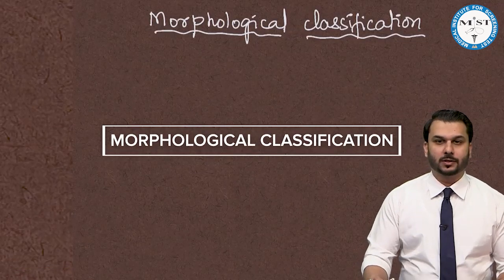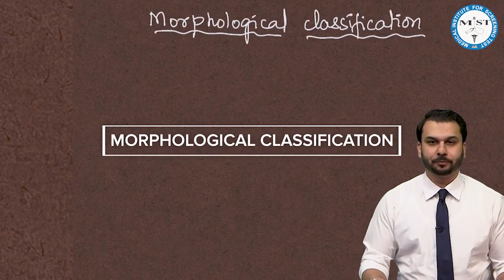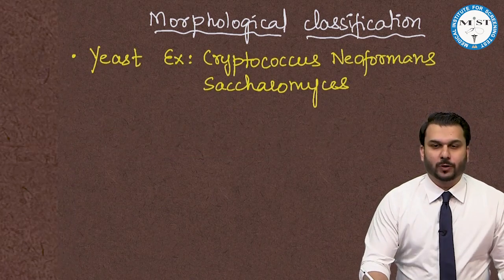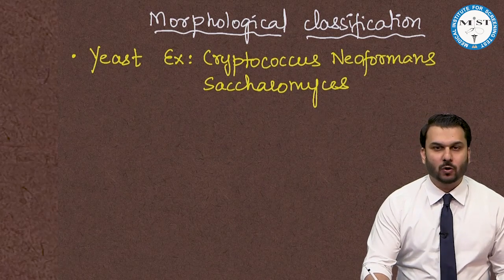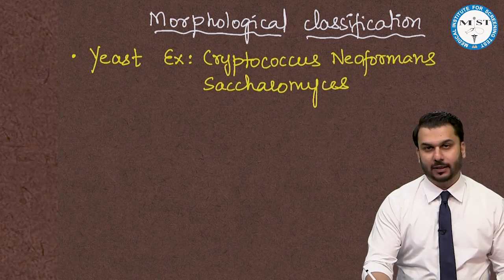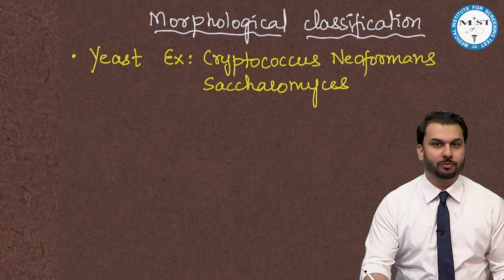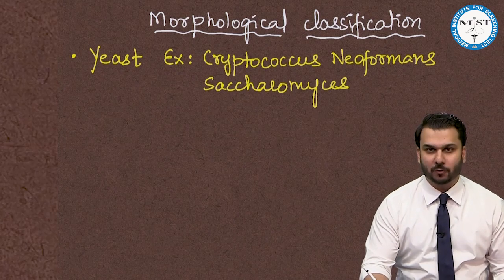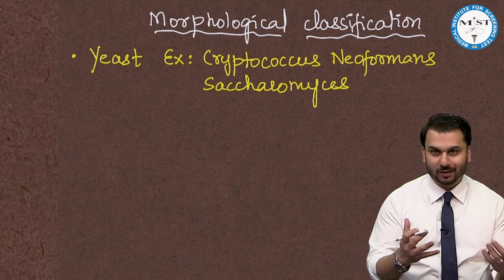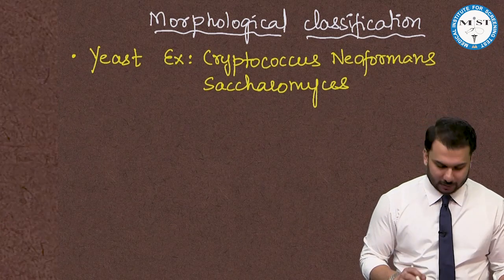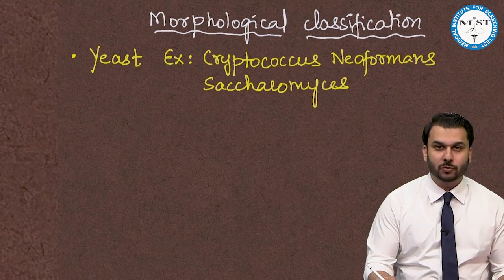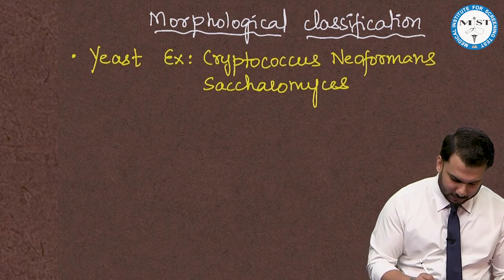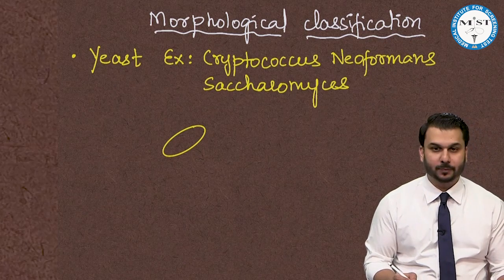In the morphological classification of fungi, the first category is called yeast. Examples of yeast include Cryptococcus neoformans and Saccharomyces. Yeast exists as unicellular organisms.